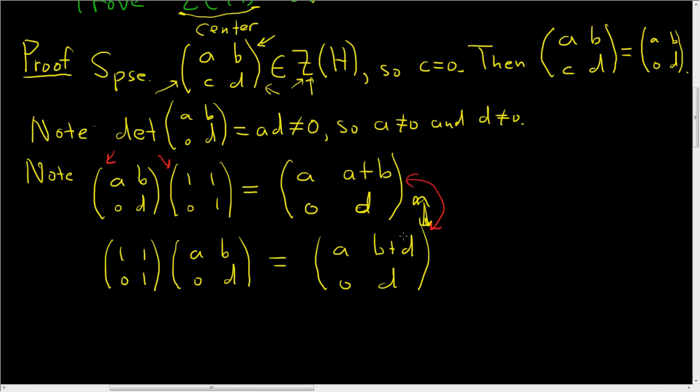That means all of the entries are equal, and the only one that seems to matter is this one. So that means a+b equals b+d. If you subtract b from both sides, you just get a equals d. And we know it's not 0. So this is not equal to 0. That's the first condition we had to satisfy in order to be inside B.